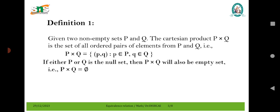Definition 1: Given two non-empty sets P and Q, the Cartesian product P cross Q is the set of all ordered pairs of elements P and Q. That is P cross Q equals (P, Q) where P belongs to the domain P and Q belongs to the co-domain Q. If either P or Q is a null set, then P cross Q will also be an empty set.